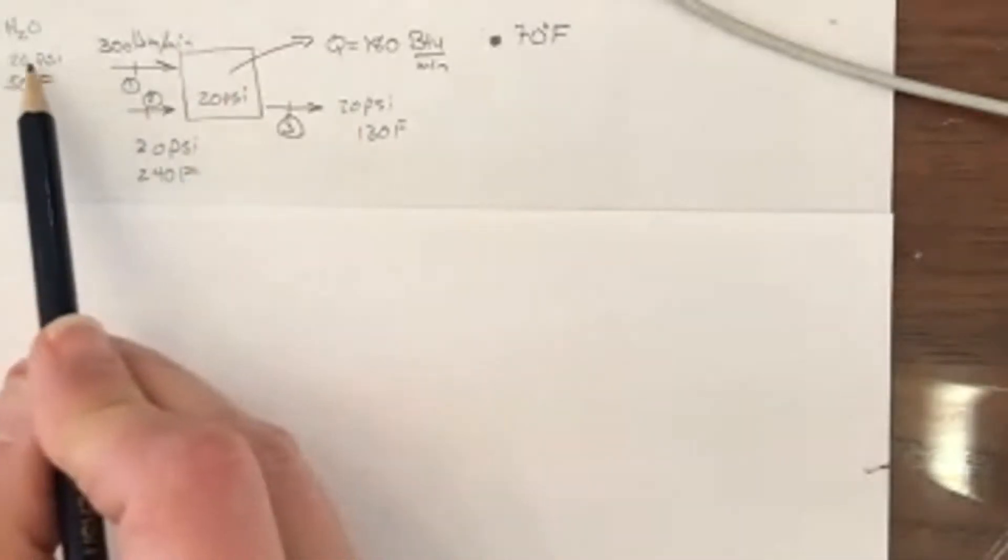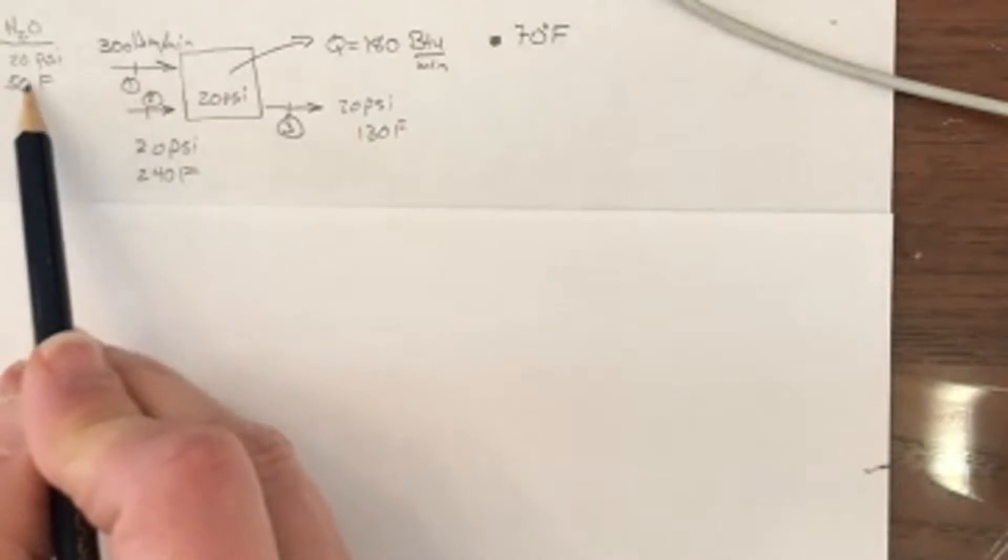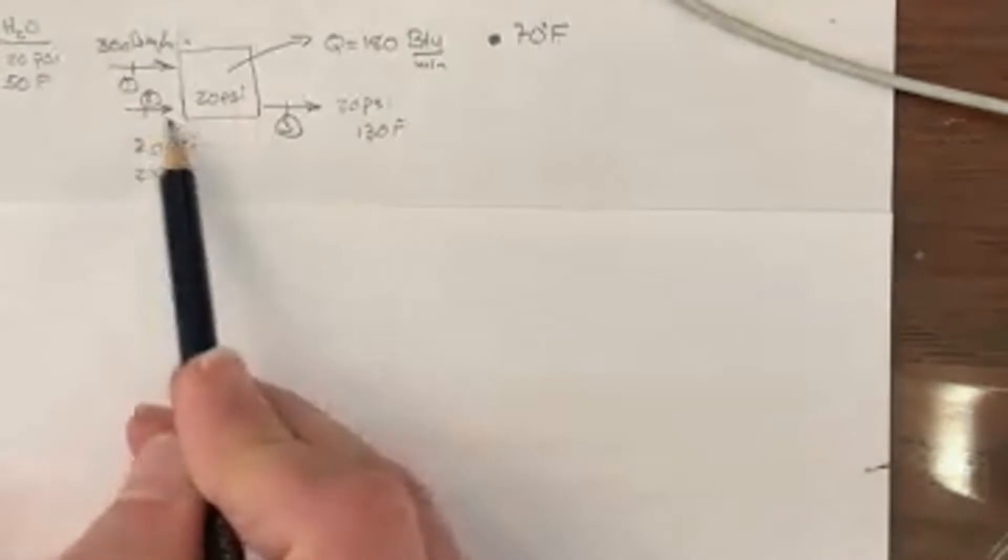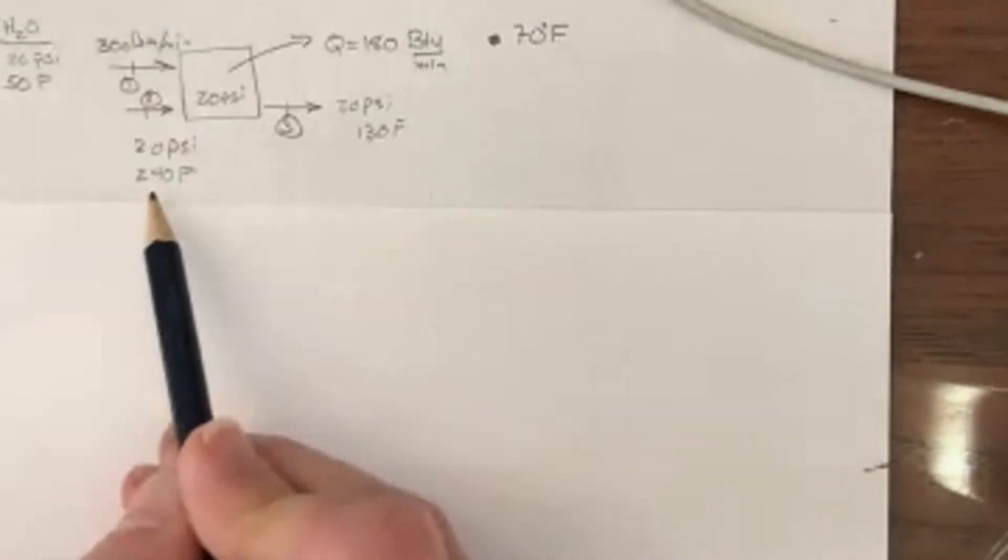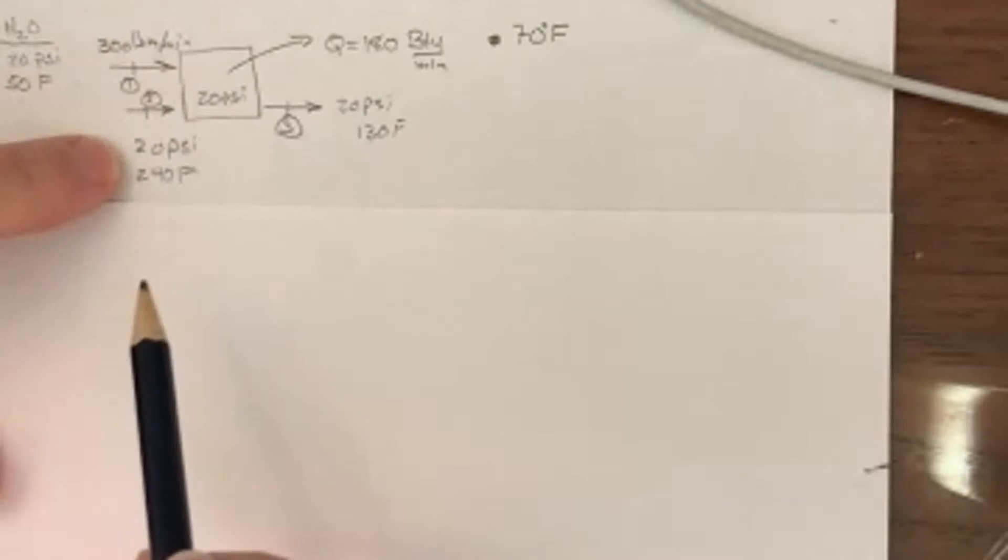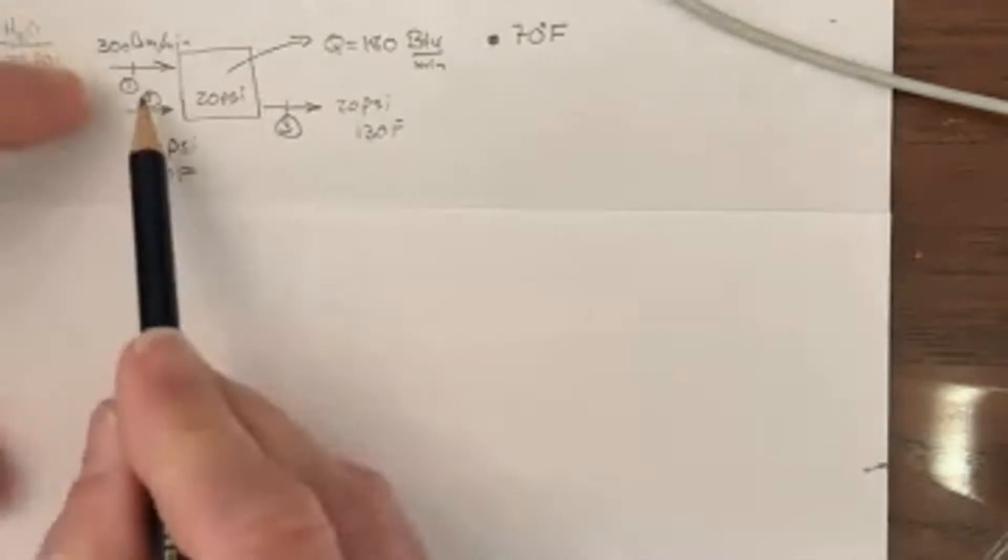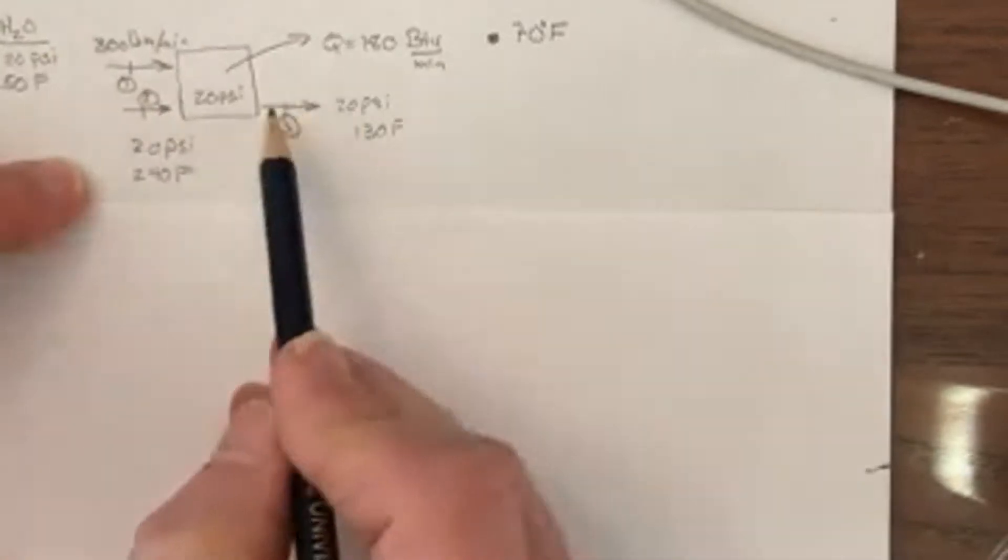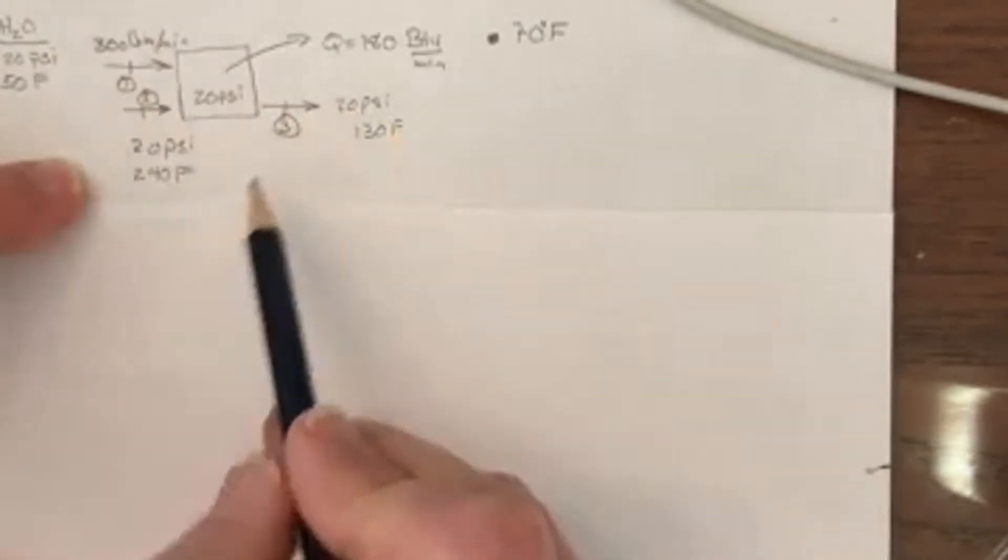So this stream is coming in, it's water, coming in at 20 psi at 50 degrees Fahrenheit at a rate of 300 pounds per minute. And this one's coming in at 20 psi at 240 degrees Fahrenheit. So this is going to be superheated vapor and this one is going to be a compressed liquid. So you're mixing superheated vapor and liquid to get out some medium heated stream.